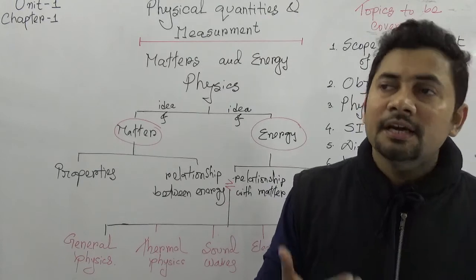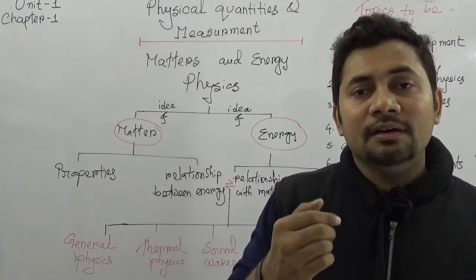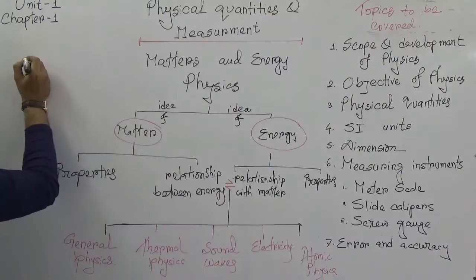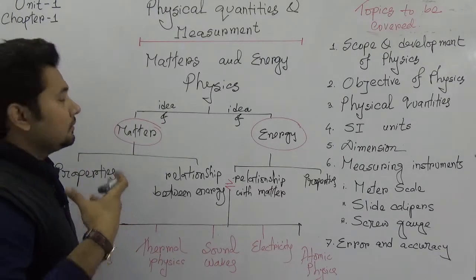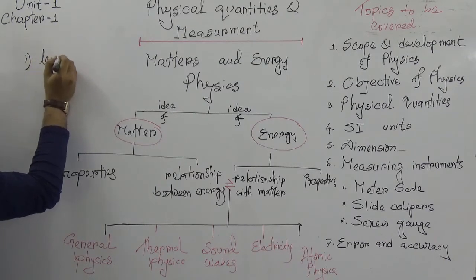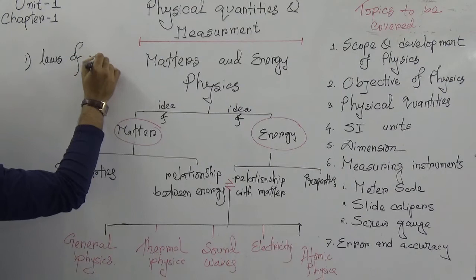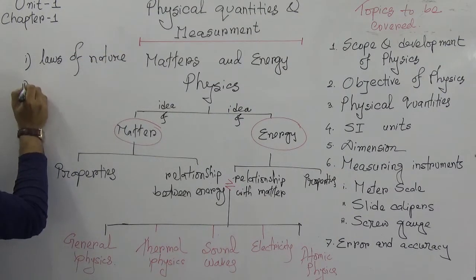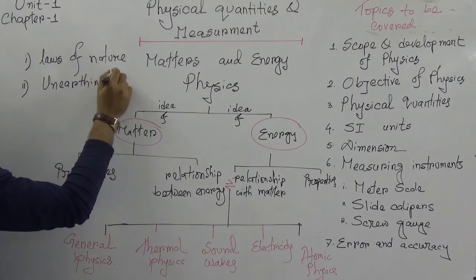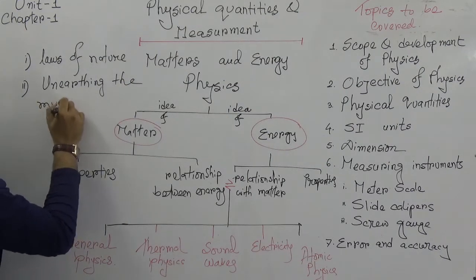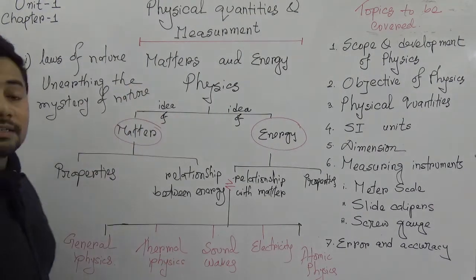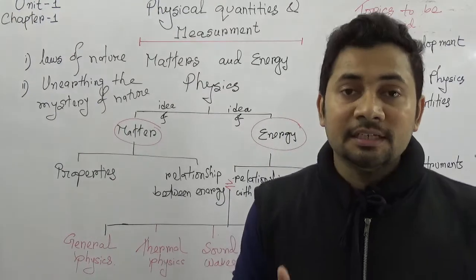If we say what is the actual objective of physics, then we will find two points. Number one: physics will clarify the laws of nature. And number two: unearthing the mystery of nature. Why nature is actually connected with physics?